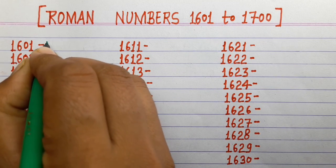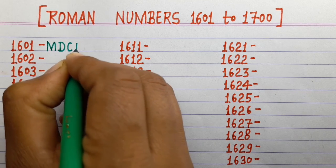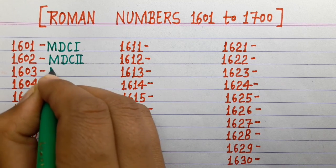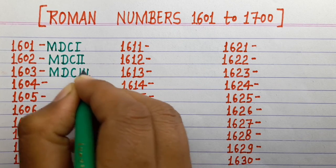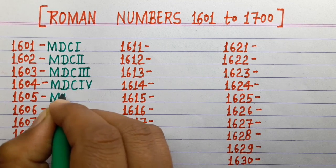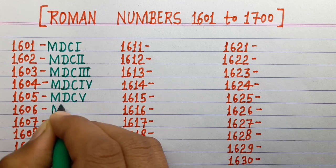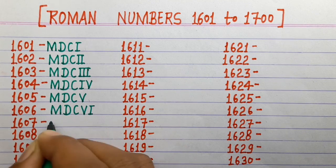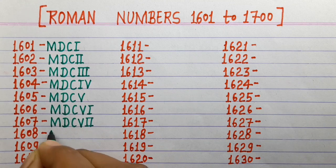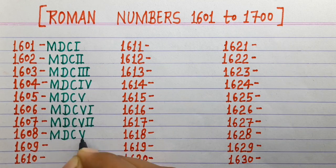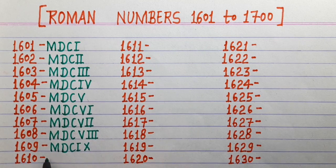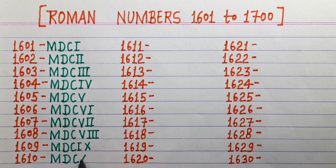1601 MDCI, 1602 MDCII, 1603 MDCIII, 1604 MDCIV, 1605 MDCV, 1606 MDCVI, 1607 MDCVII, 1608 MDCVIII, 1609 MDCIX, 1610 MDCX.